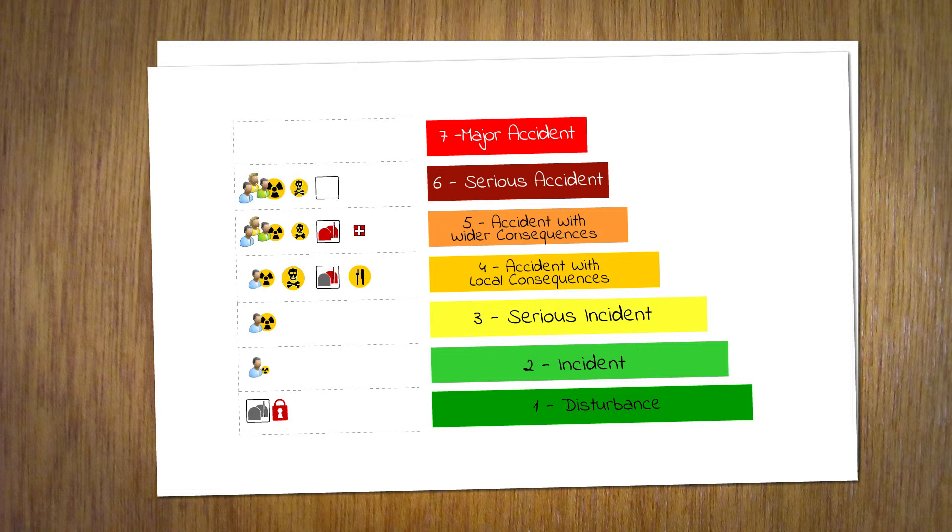By Stage 6, the core and the barriers are already so far damaged that there is a significant release of radioactive materials, and the fully planned countermeasures of civil protection are required.